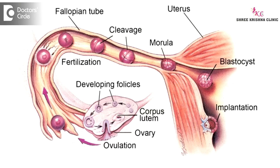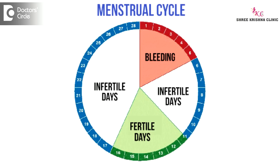Fertile period — let us understand what this is. Release of egg, that is ovulation, happens usually 14 days prior to the menstruation in a 28-day cycle. In a 28-day cycle, the fertile period usually lasts for 8 to 10 days — 6 days prior to the ovulation and 2 days after the ovulation, that is from day 8 to day 18.